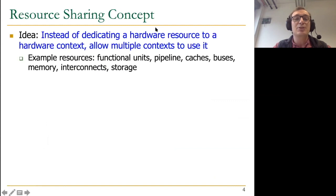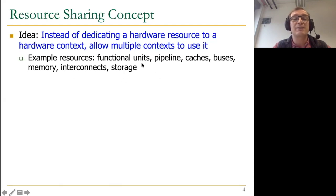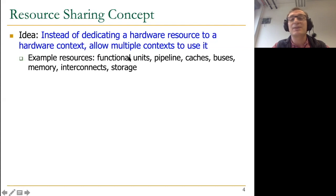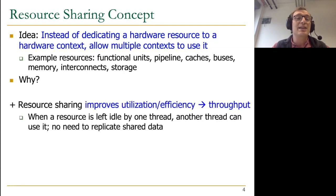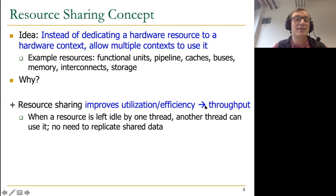Resource sharing is a very simple but fundamental concept. Instead of dedicating a hardware resource to a single hardware context, you allow multiple contexts to use it. There could be many resources like functional units, pipeline caches, buses, memory interconnects, and storage. Even in multi-threading — Intel calls it hyper-threading, but simultaneous multi-threading — functional units are shared across different threads and hardware contexts. We do this because it clearly improves utilization and efficiency, and as a result, improves overall throughput. When a resource is left idle by one thread, another thread can use it.